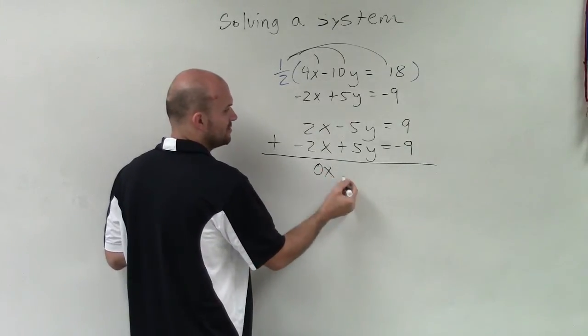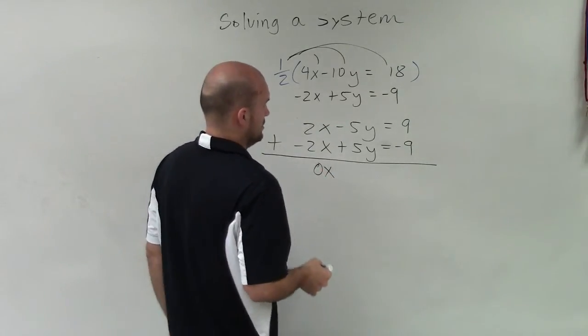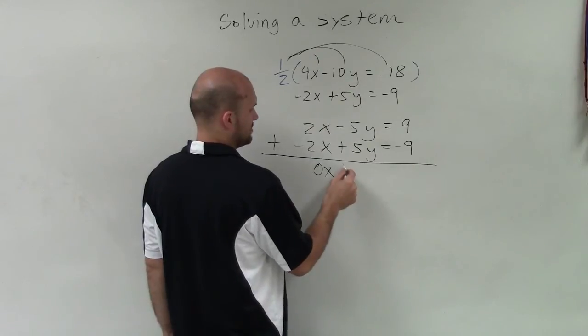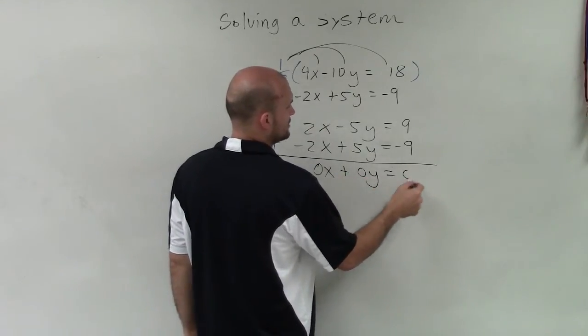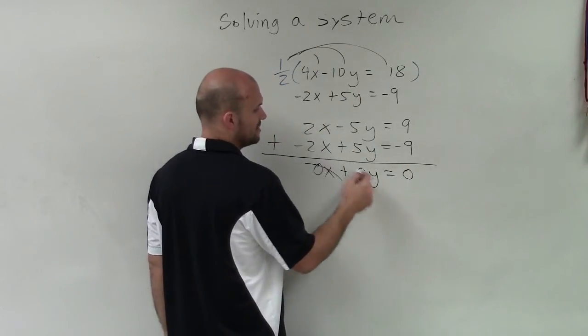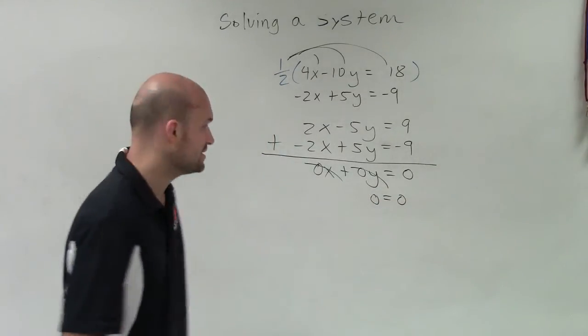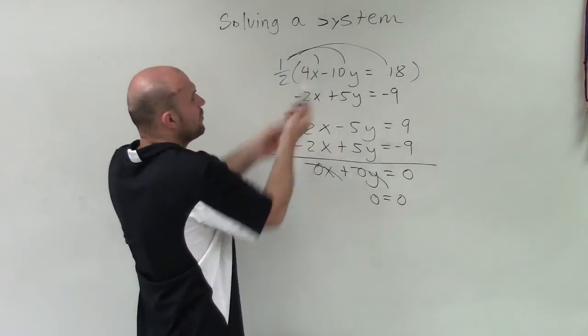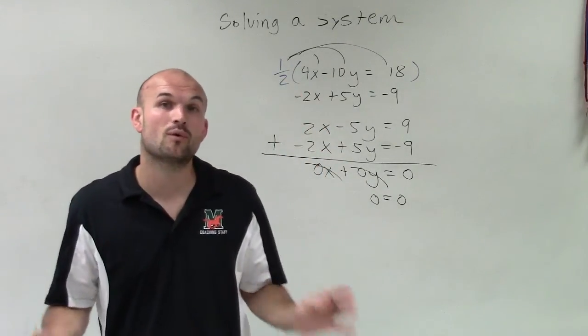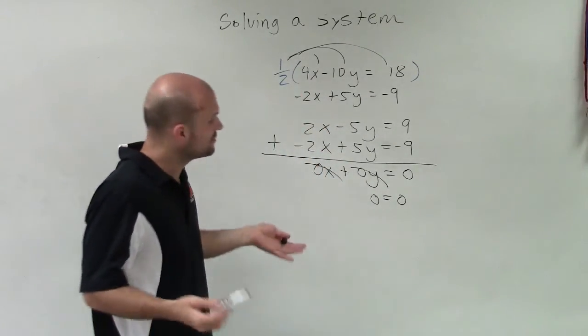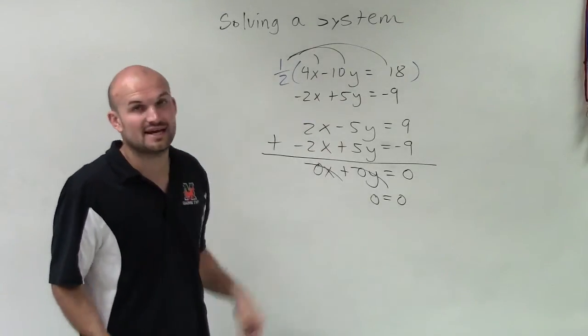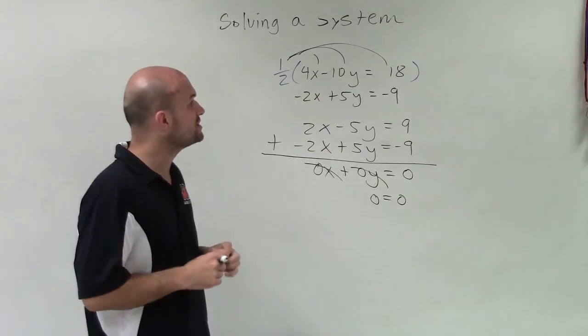Well, what happens when we get this is we get 0 plus 0y equals 0. That eliminates, that eliminates. So we get 0 equals 0. Well, since 0 is always going to equal 0, we know that it doesn't matter what values we have for x or for y, we're always going to have a solution. So therefore, this is a case where we have infinitely many solutions for our graph.